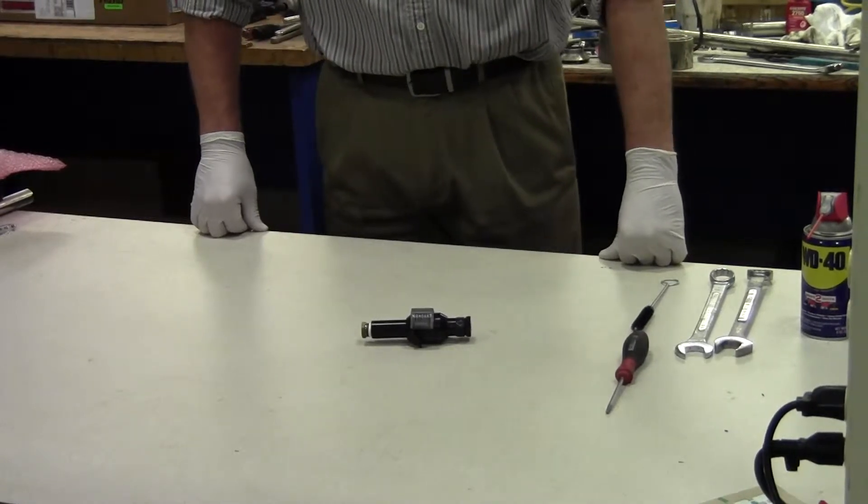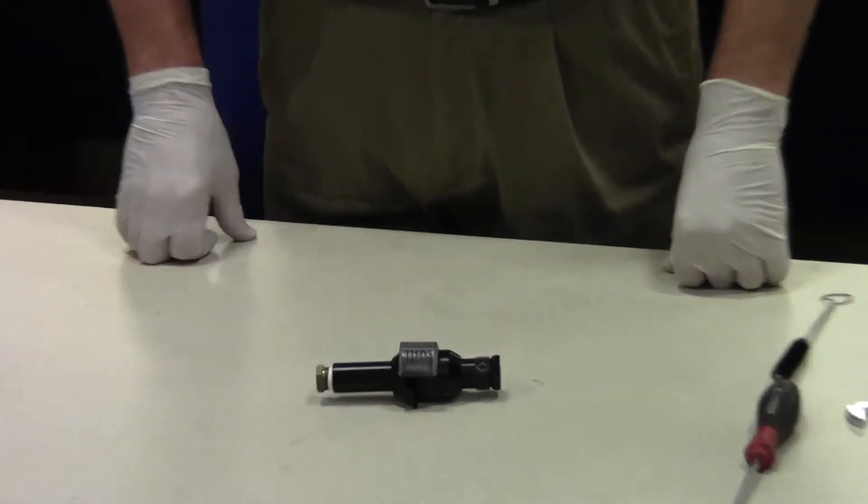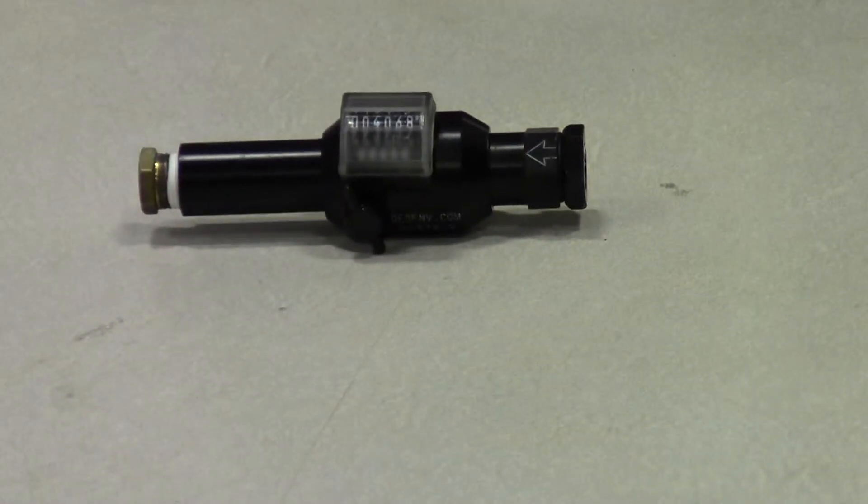If you have a counter that you cannot get adjusted to work, you will need to remove the counter from the filter regulator. Once the counter is removed,